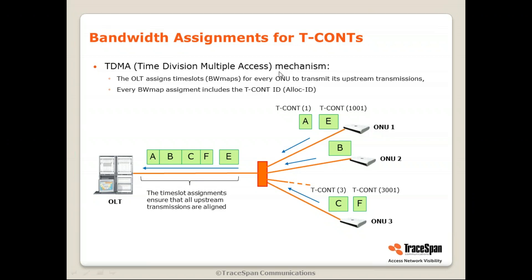This is done by time slots — the meaning of time division multiple access. The OLT assigns time slots called BW maps to every ONU to transmit, and every BW map includes the TCON. Every ONU has an ID assigned by the OLT, a default TCON with the same ID, and may have additional TCONs depending on service requirements. For example, ONU 1 has TCON 1, ONU 3 has TCON 3 and also TCON 3001. ONU 2 also has TCON 2.